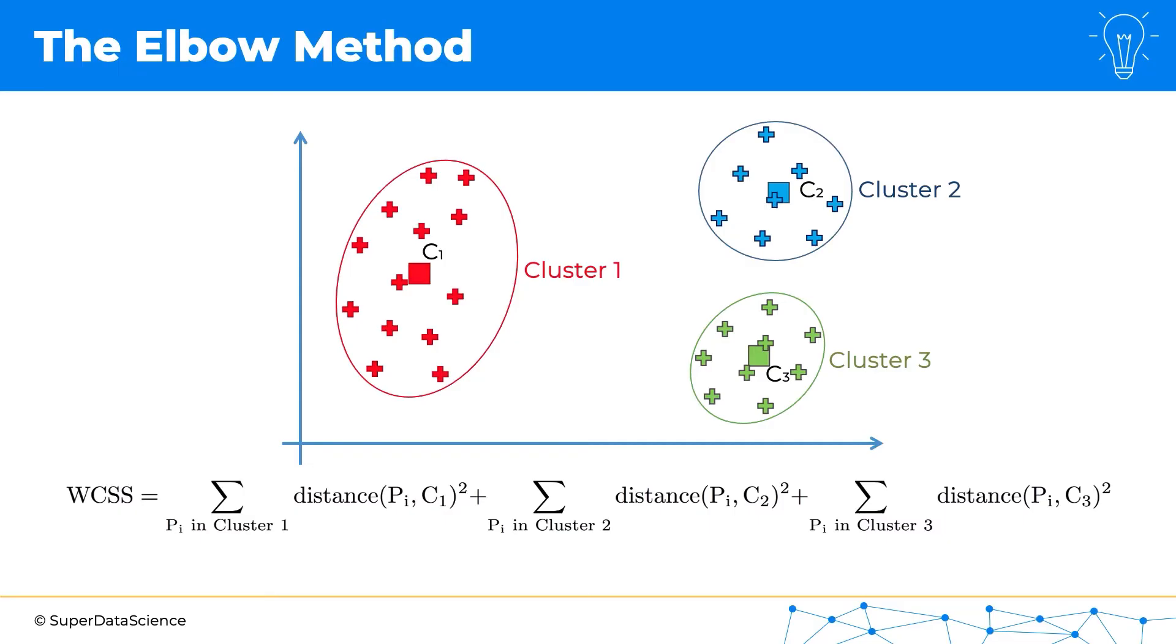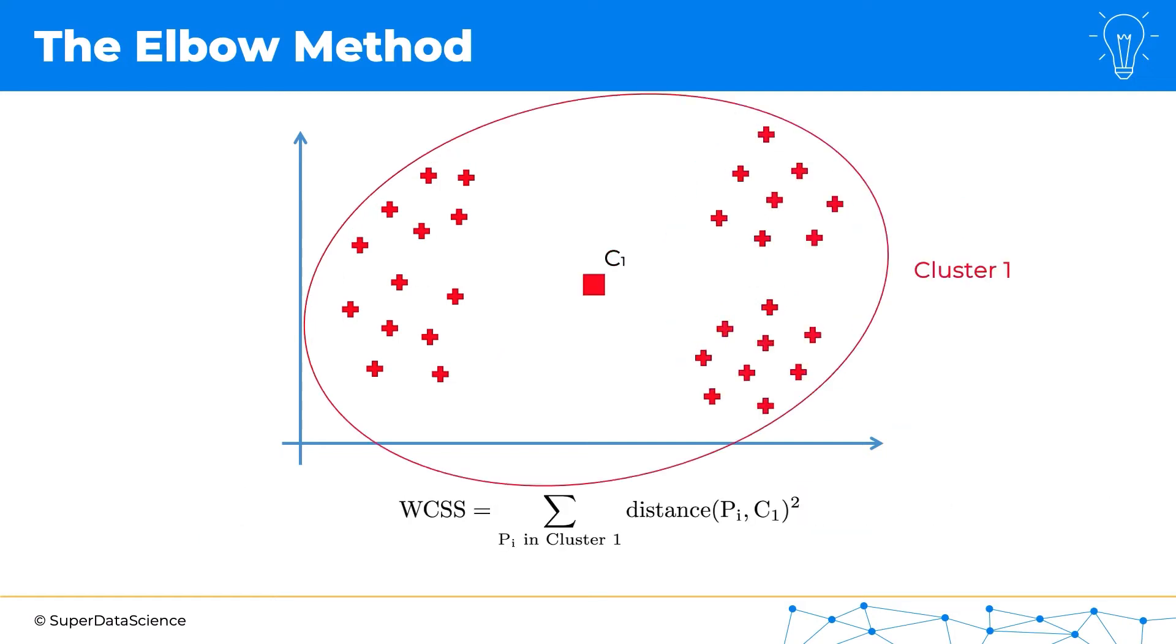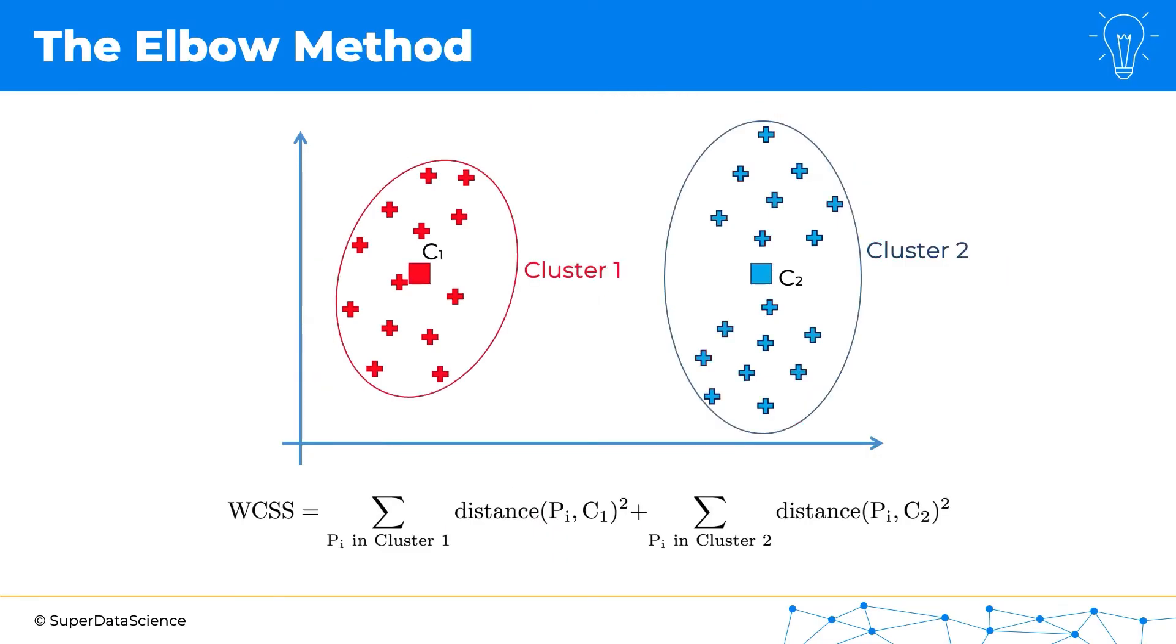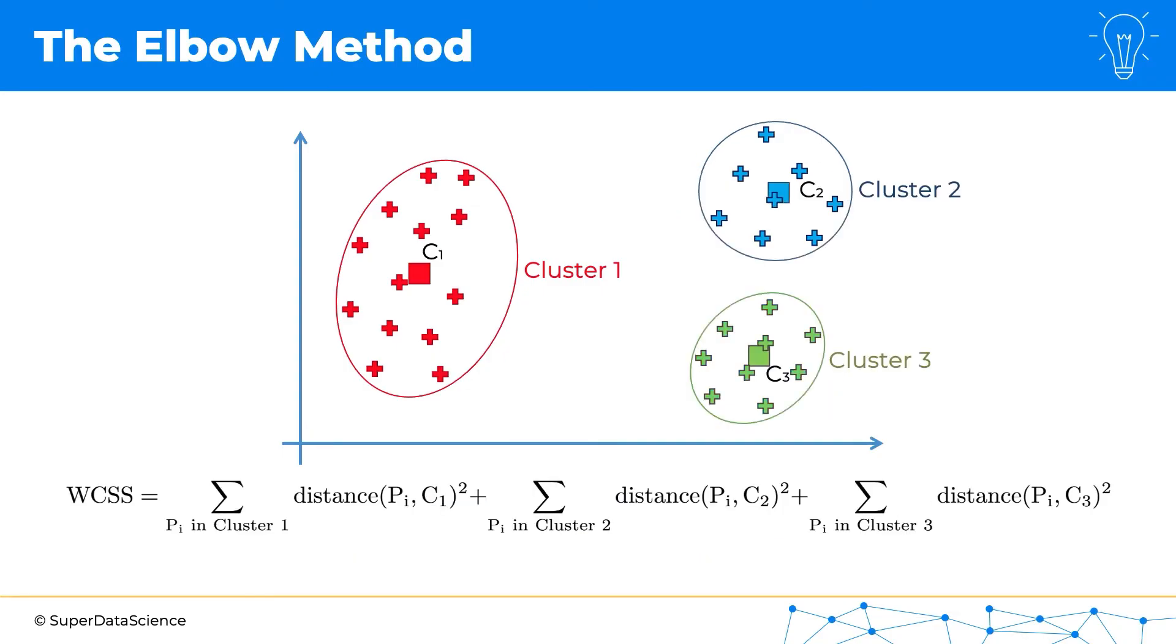And the second thing to note is that the more clusters we have, the smaller WCSS becomes. You can even see it visually. So here the distances are high, and especially when you square them, the WCSS will be quite large. Then here the distances are smaller, and so the WCSS drops. And here again the distances become smaller and smaller.